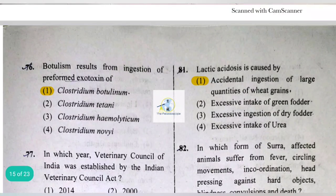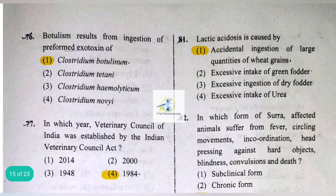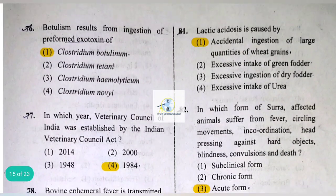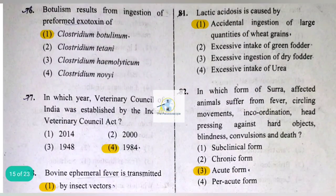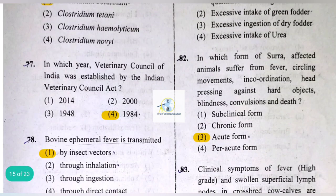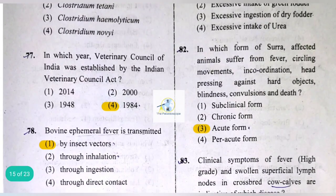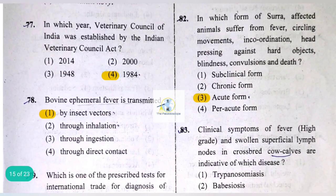The Veterinary Council of India was established by the VCI Council Act of 1984.